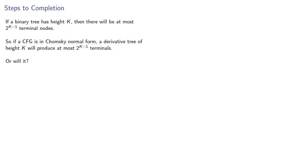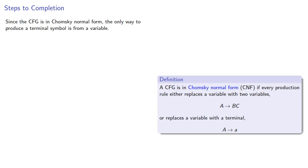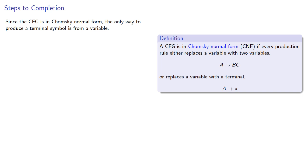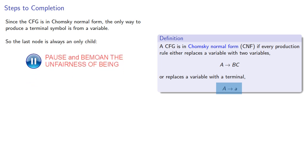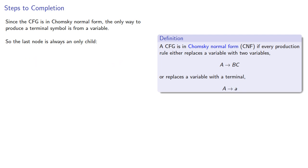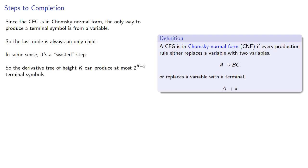Or will it? Since the CFG is in Chomsky normal form, the only way to produce a terminal symbol is directly from a variable, so the last node is always going to be an only child. In some sense, it's a wasted step. So the derivative tree of height k can produce at most 2 to the power k minus 2 terminal symbols.